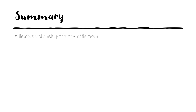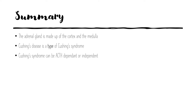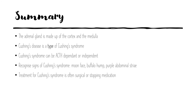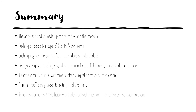Okay, you've reached the end, so here's our summary. The adrenal gland is made up of the cortex, which has the zona glomerulosa, fasciculata and reticularis, as well as the medulla. Cushing's disease is a type of Cushing's syndrome, and Cushing's syndrome can be ACTH-dependent or independent. When examining a patient with Cushing's syndrome, you may notice that they have a moon face, a buffalo hump, or purple abdominal striae. The treatment for Cushing's is often surgical or stopping medication if it is iatrogenically induced. Then we learnt about adrenal insufficiency, which presents as tan, tired, and teary. In order to treat this, we give corticosteroids, mineralocorticoids, and fludrocortisone. Thank you so much for listening.